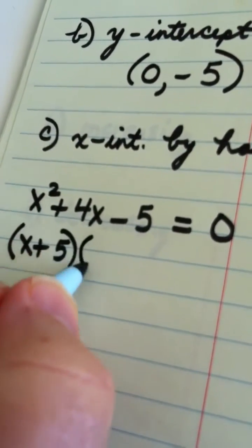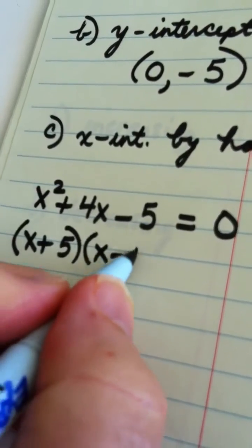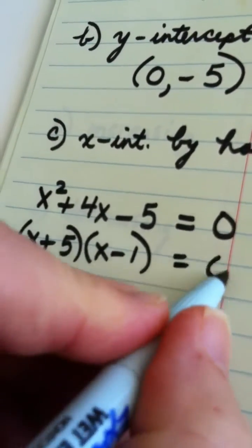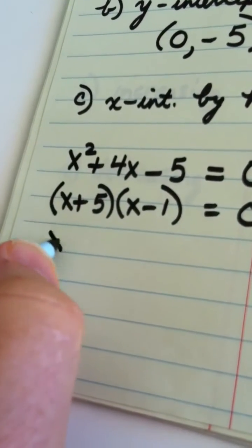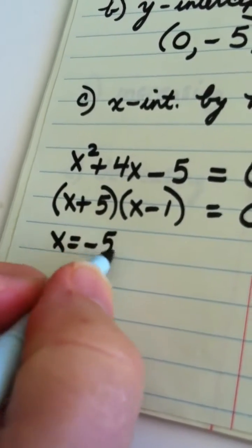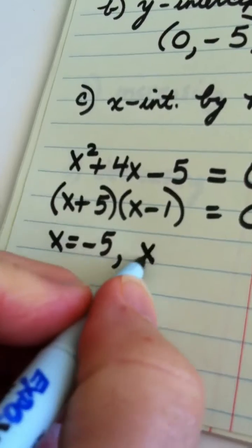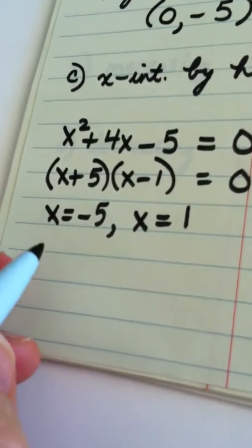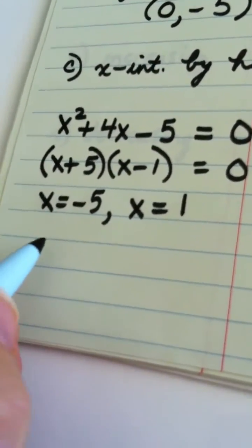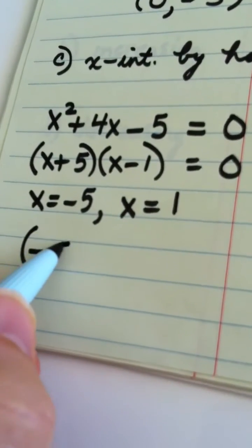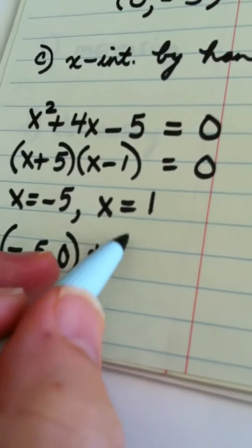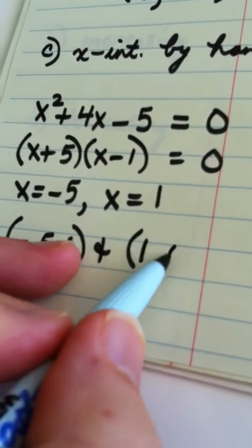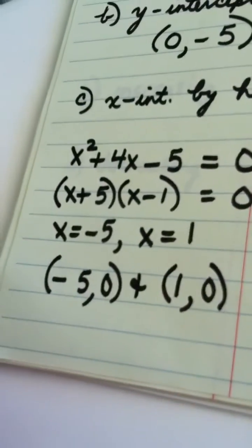What would make this 0 is an x value of negative 5. What would make this 0 is an x value of 1. So we have 2 x-intercepts: the ordered pair negative 5, 0 and the ordered pair 1, 0.